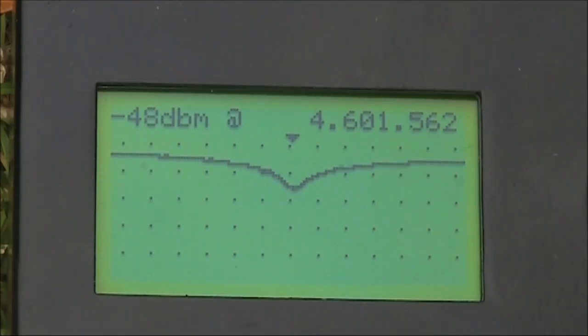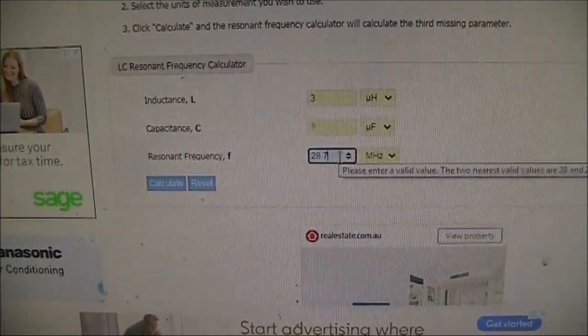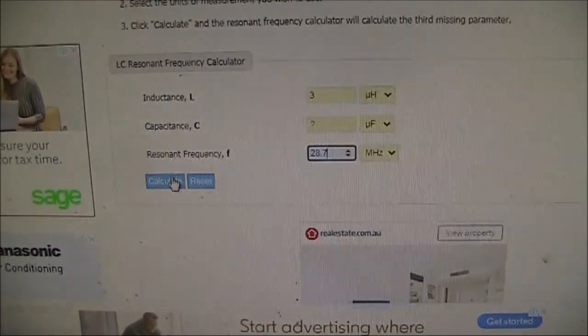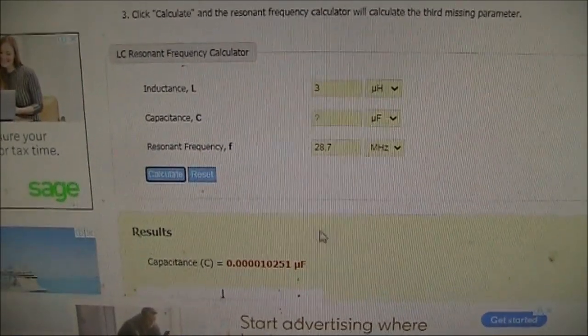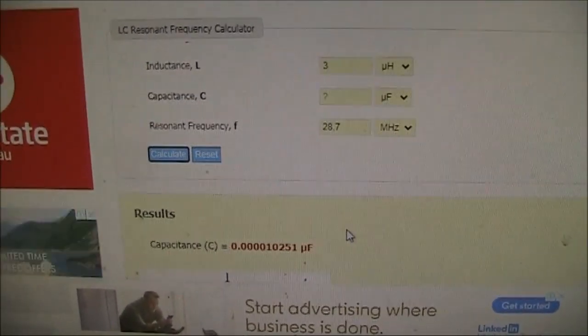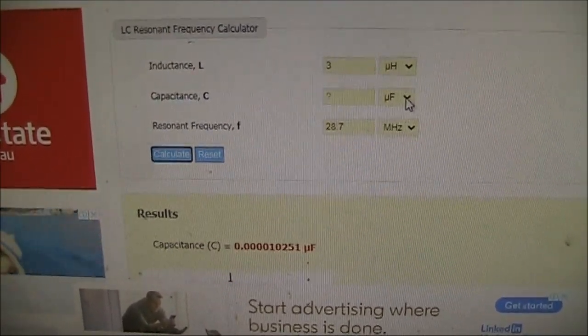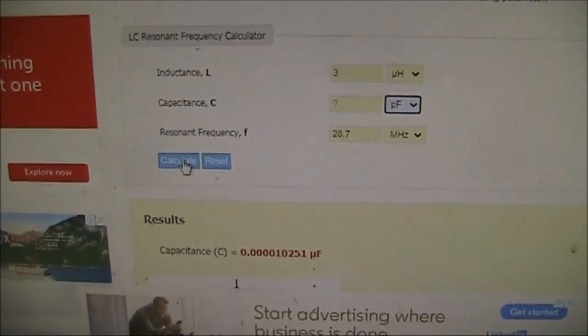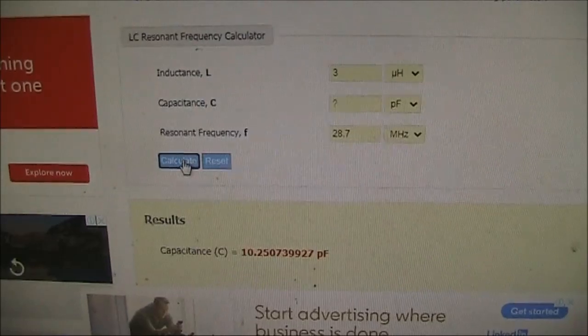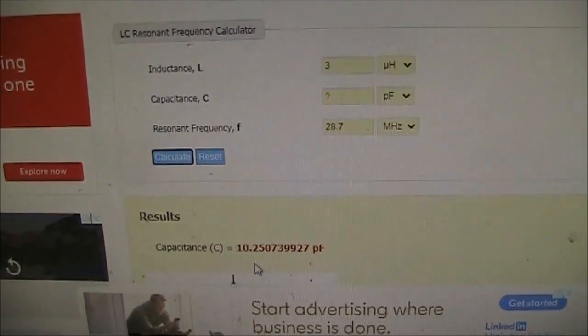We just need to do some calculations. We can get a range of 4.6MHz to 28.7MHz, and that is with the 3µH inductance. For the lowest capacitance, we've put in the highest frequency of 28.7MHz, 3µH, and then we calculate. And the capacitance value is shown in µF, which we don't want. We want it in picofarads, so we'll calculate again.